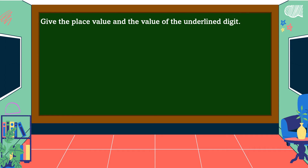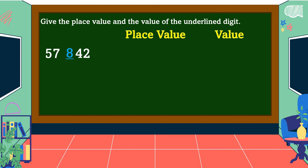Give the place value and the value of the underlined digit. The underlined digit for the first number is 8. What is your answer for the place value? Yes, you are right — it is hundreds. And the value? Very good — it is 800.